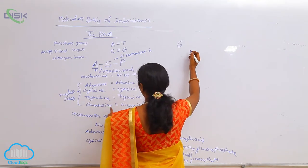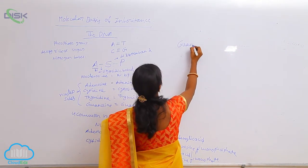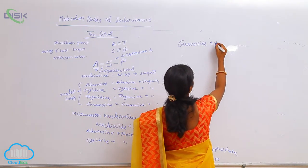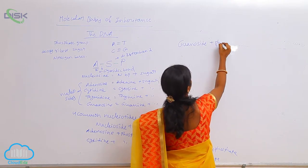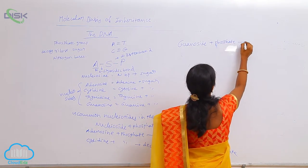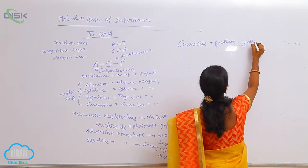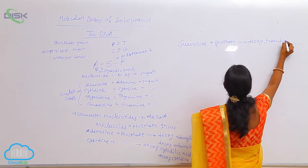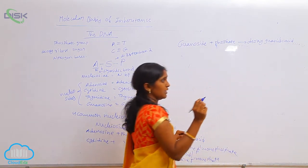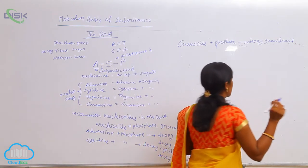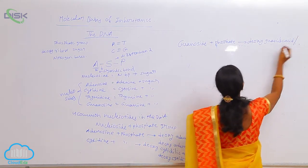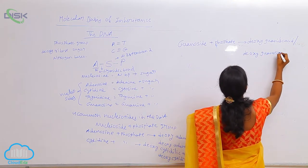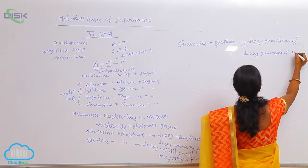Next, take guanine. So that is guanosine. Guanosine is a nucleoside. A nucleoside with sugar plus phosphate group is written as deoxyguanylic acid, because deoxyribonucleotides are always in acidic form. It is also written as deoxyguanosine-5'-monophosphate.